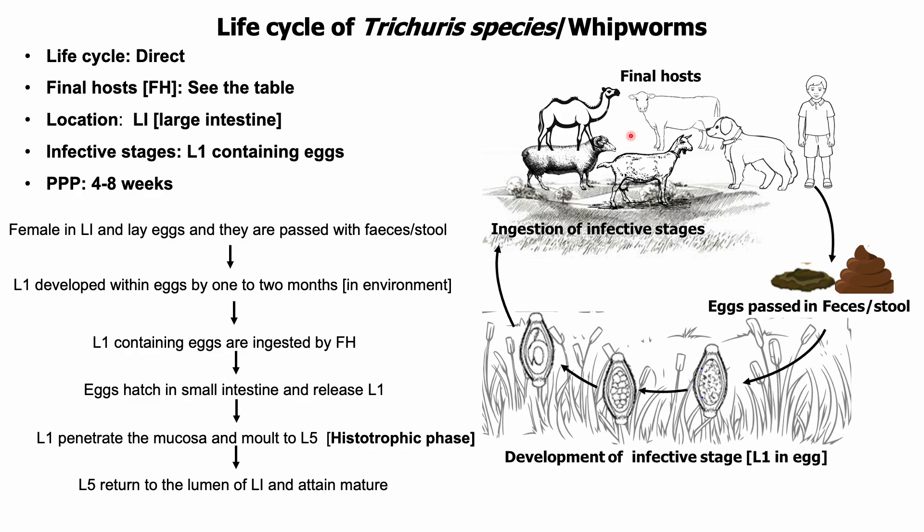After ingestion, eggs hatch in the small intestine and release larva stage one (L1). L1 penetrates the mucosal layers and molts to L5. Finally, L5 returns to the large intestine and becomes mature. It is noted that adults lie on the mucosal surface with their anterior ends embedded in the mucosa. It takes around four to eight weeks to complete the life cycle.